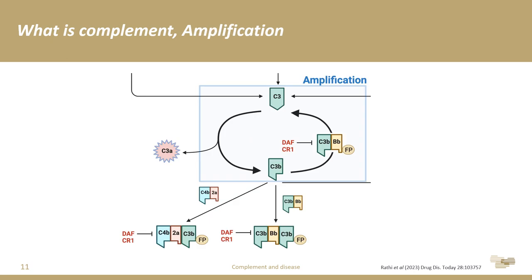Despite which activation pathway complement has begun through, they all focus on the proteolytic cleavage of C3 into C3B. This is targeted active proteolysis, not merely natural tick-over. As C3 is processed, it exposes an internal thioester within C3B that allows it to covalently bond to any surface it contacts. While on the surface, it is bound by complement factor B, processed by factor D, stabilized by properdin, and forms another C3 convertase — beginning the amplification loop with exponential deposition of C3B and creation of more C3 convertases.